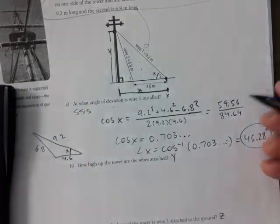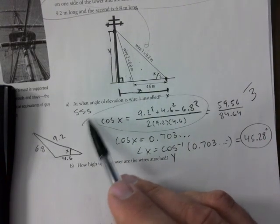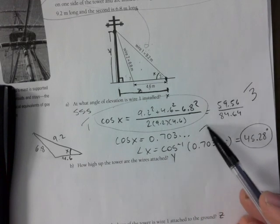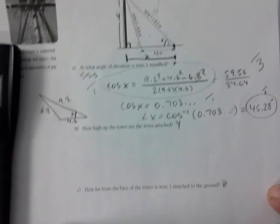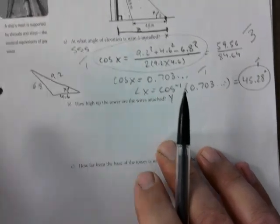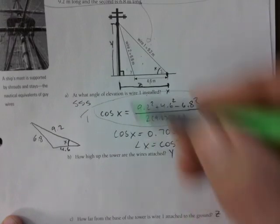So, shift cosine equals 45.28. So, I would give you three marks for this question. One mark for correct setup. One mark for work. And one mark for the correct final answer.